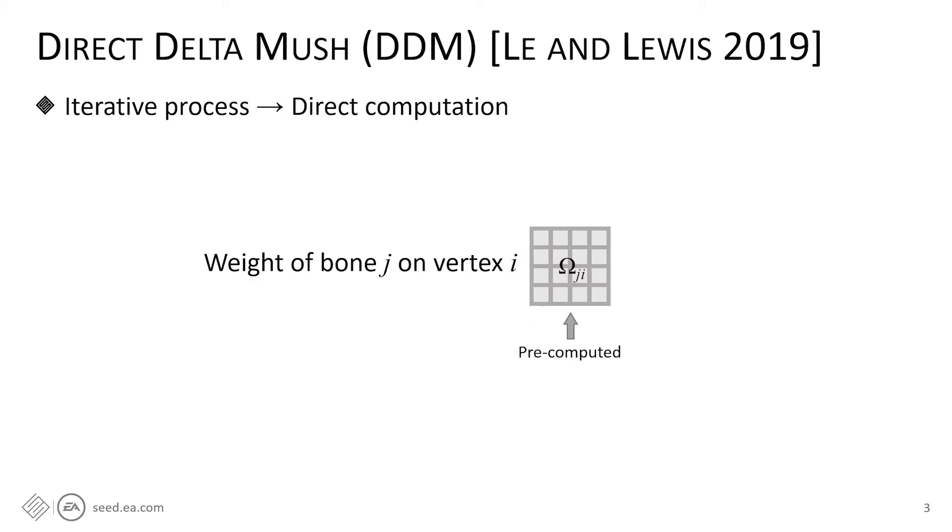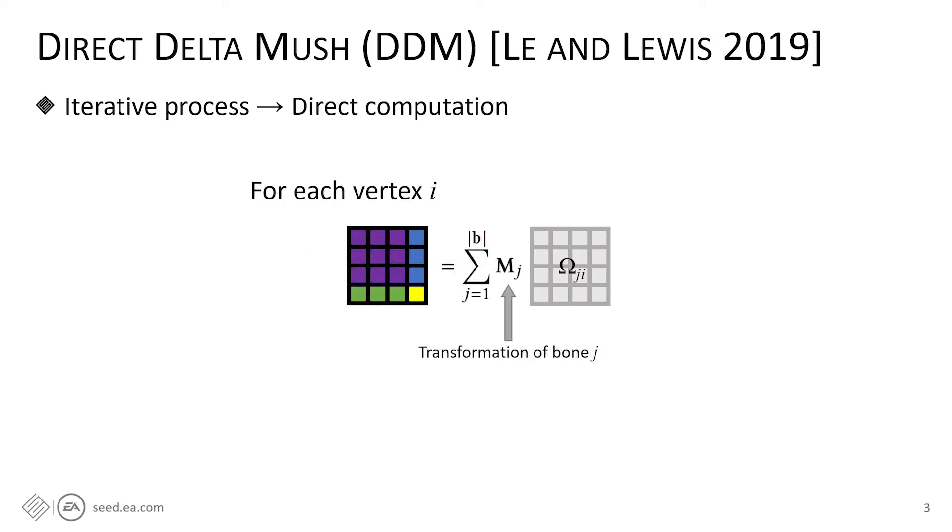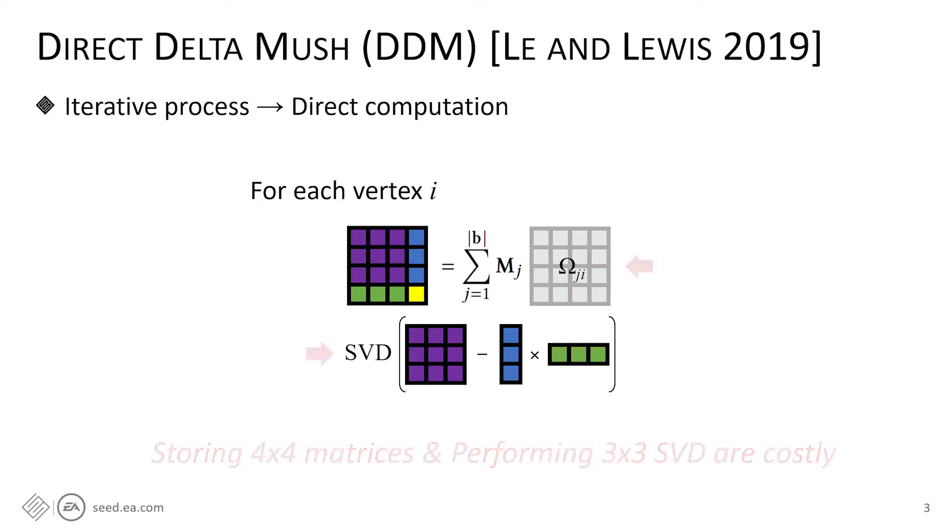So two years ago, we proposed an improvement called direct delta mush skinning or DDM in short. The main idea of DDM is removing the iterative process by pre-computing and caching the DDM skinning weights. At runtime, we compute the transformation of each vertex by first blending DDM weights after performing bone transformations, and then compute a singular value decomposition or SVD of a 3x3 matrix to orthogonalize the rotation part. This process is still quite costly because we need to store 4x4 weight matrices, and we need to compute SVD for each vertex at runtime.